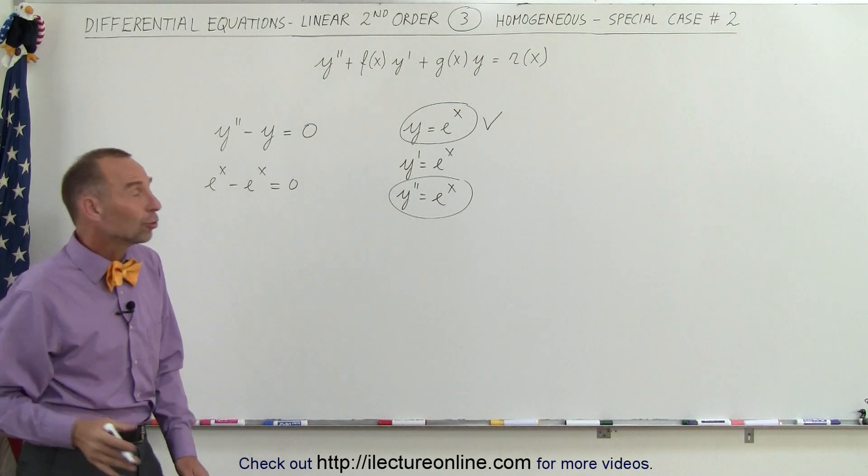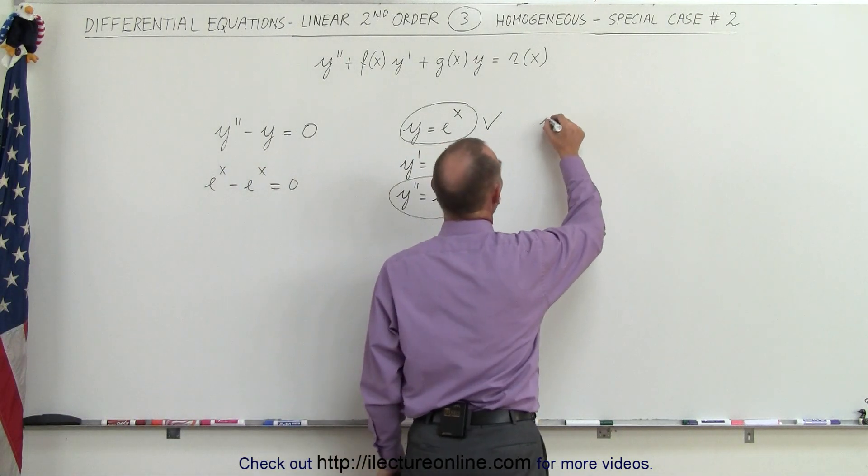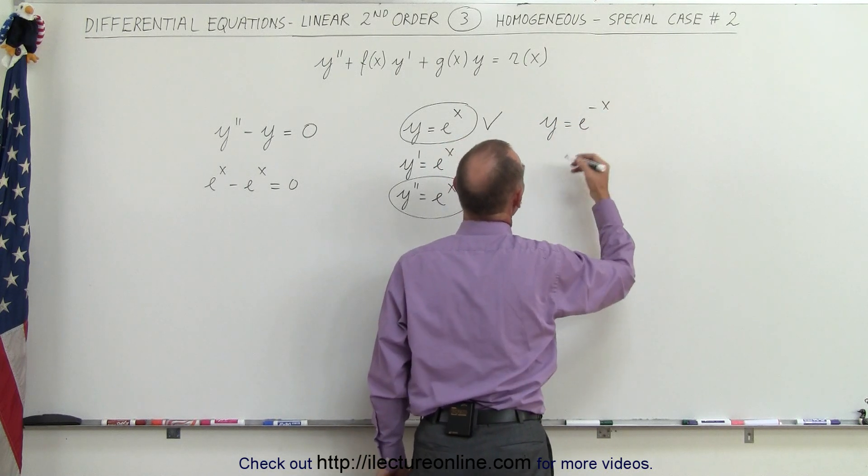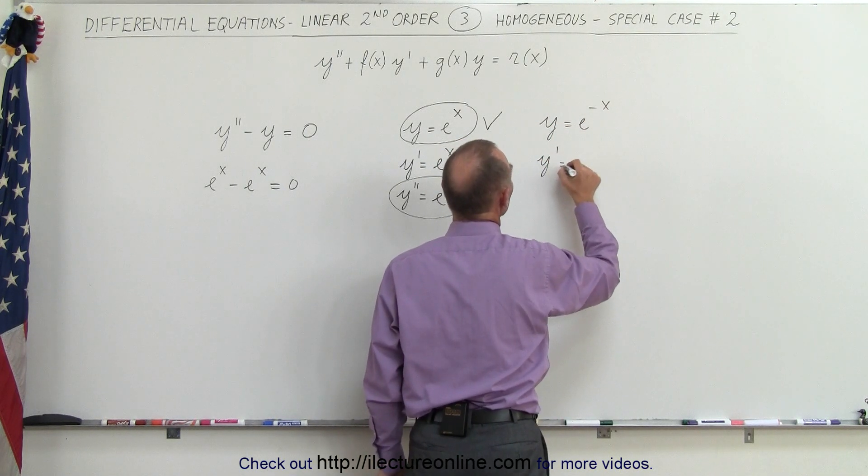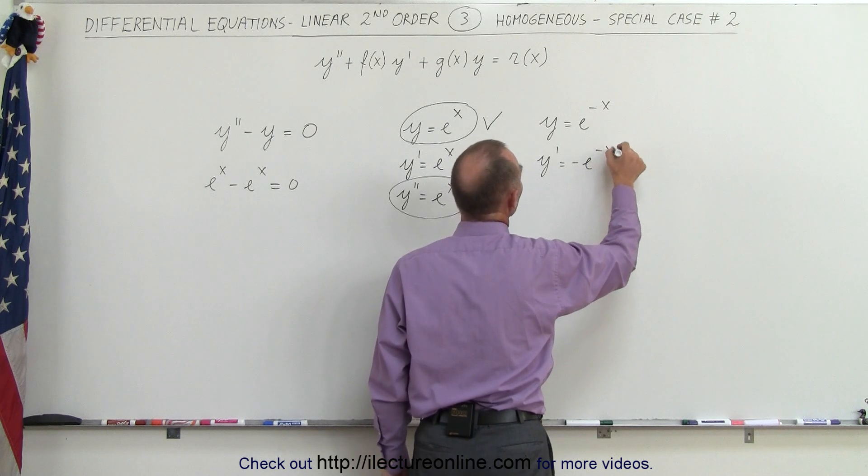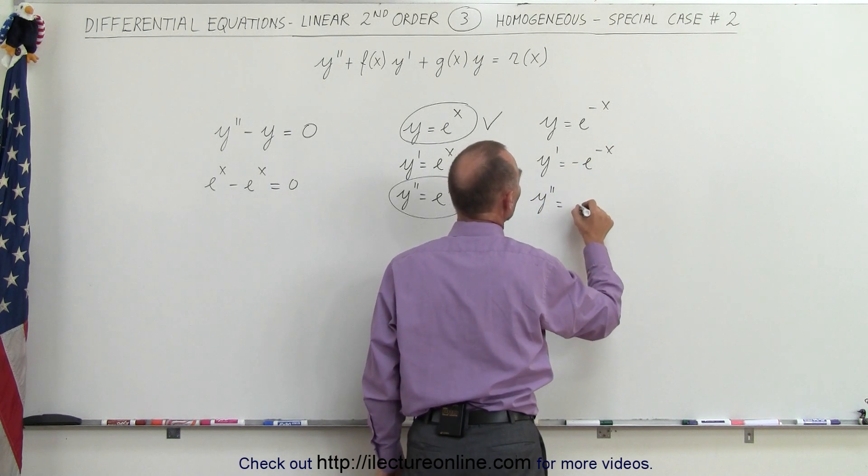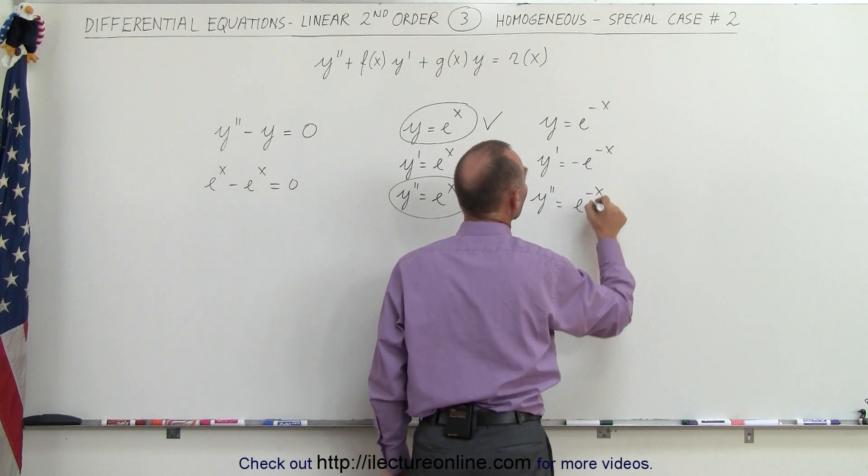It turns out there's another solution. How about if we use y equals e to the minus x, because when we take y prime that is equal to minus e to the minus x and we take y double prime that is equal to a positive e to the minus x.